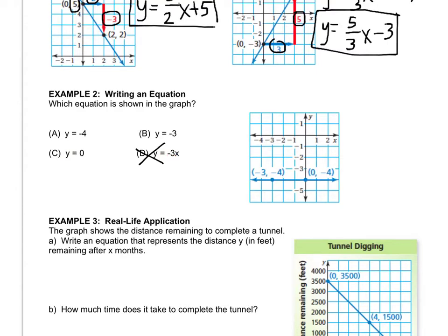So what is the y equal to? Is the y equal to negative 4, negative 3, or 0? Are all the points on this line, what do they have in common? What they have in common is that their y value is negative 4. So it's choice A.